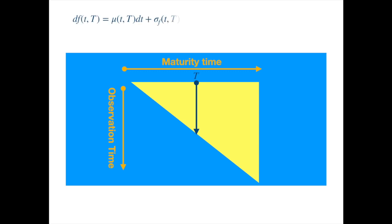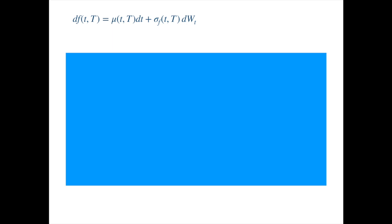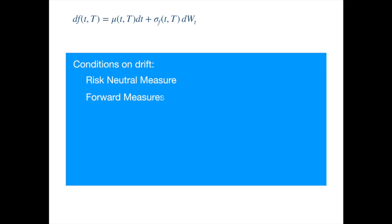Like many stochastic differential equations in finance, it has a drift term and a volatility term. The drift term has to satisfy certain conditions to avoid arbitrage, so we are going to derive those conditions, first under the risk neutral measure, and then under the forward measure. These conditions are the crux of the HJM framework, and once you understand the drift conditions, the rest follow quite naturally.